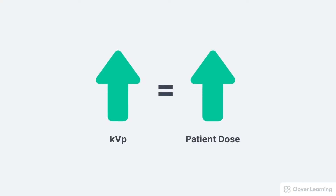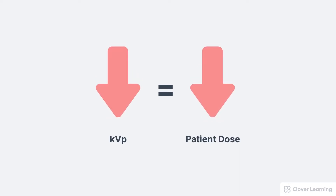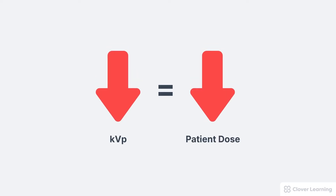Changes in KVP also influence the patient dose. Increasing the KVP increases the dose to the patient because increasing KVP creates more x-ray photons, which means more photons are striking the patient. The reverse is also true — if we decrease the KVP, this decreases the patient dose. This again assumes that only the KVP is changing, we're using a fixed technique that is not AEC, and no other variables are changing.